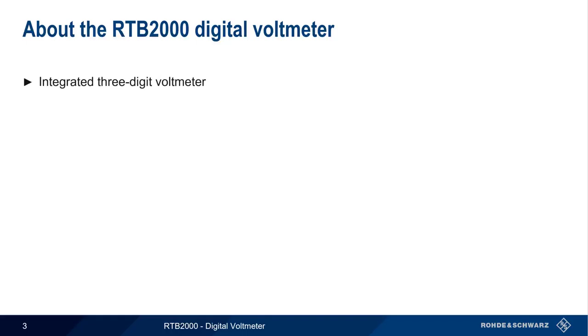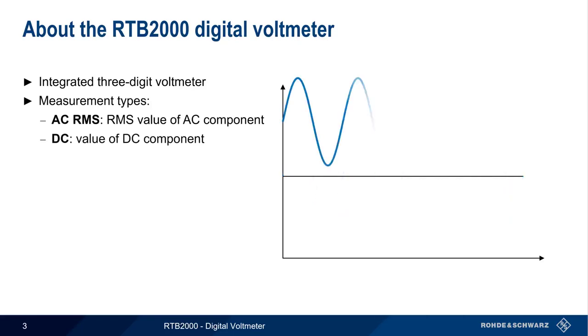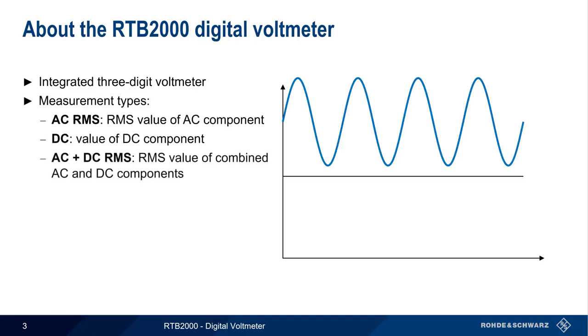The RTB2000 has built-in three-digit voltmeters which can be used to make three different types of measurements. First, they can measure the RMS value of the AC component of a signal. They can also be used to measure the DC component of either a pure DC signal or an AC signal with a DC offset. The third supported measurement is the RMS value of a combined AC and DC signal.